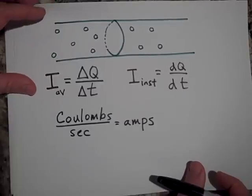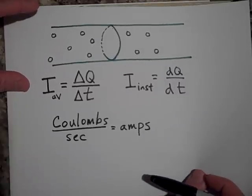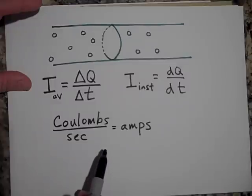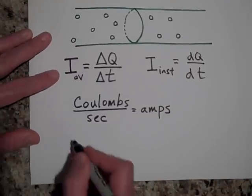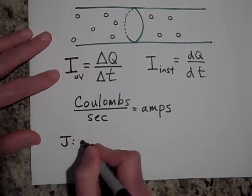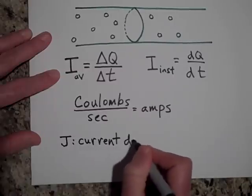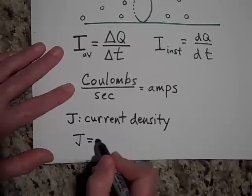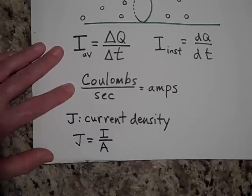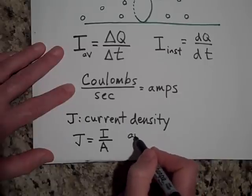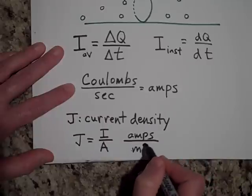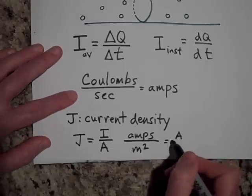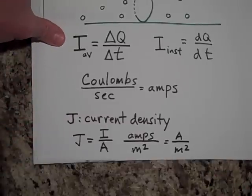Now let me tell you about current density. Sometimes we want to talk about how dense the current is — that's the current per cross-sectional area. We designate current density with a J. J is equal to the current per cross-sectional area, and the units for that are amps per square meter. Sometimes we abbreviate an amp with just a capital A. So that's current density.